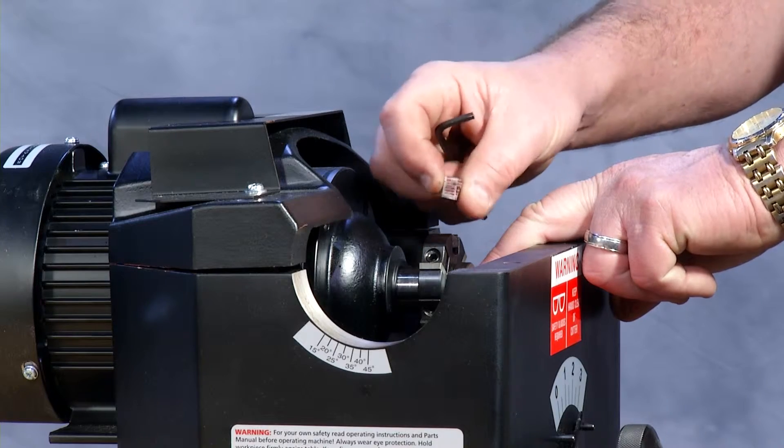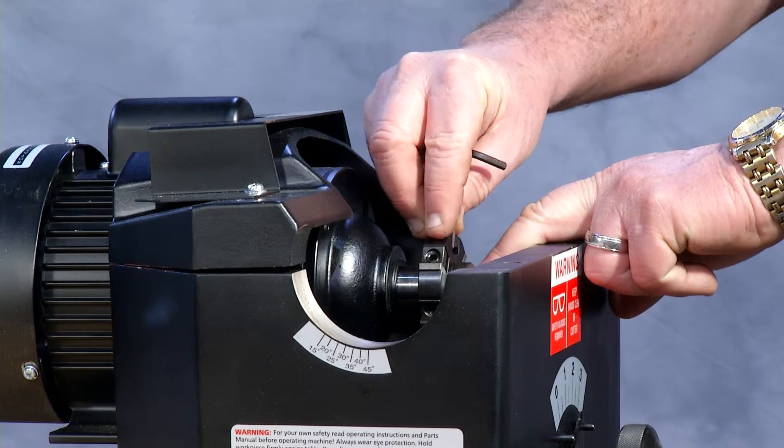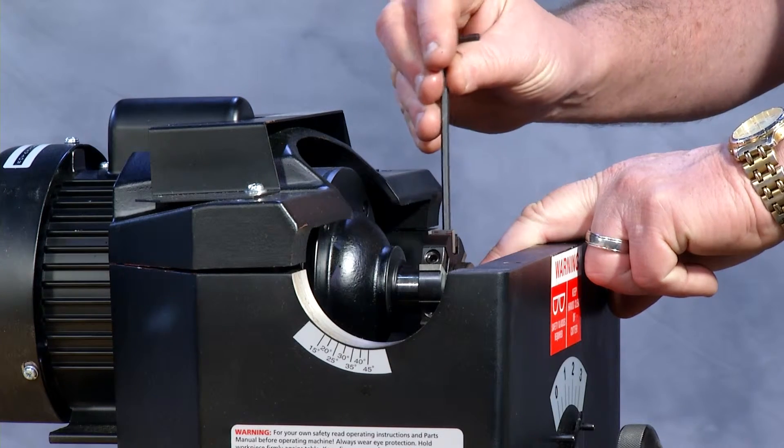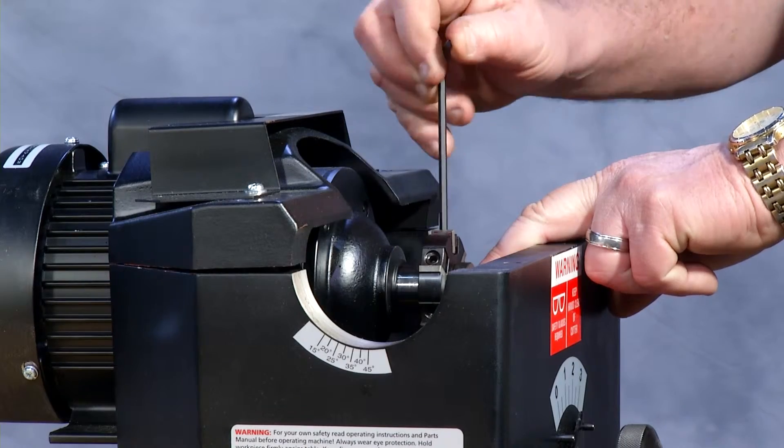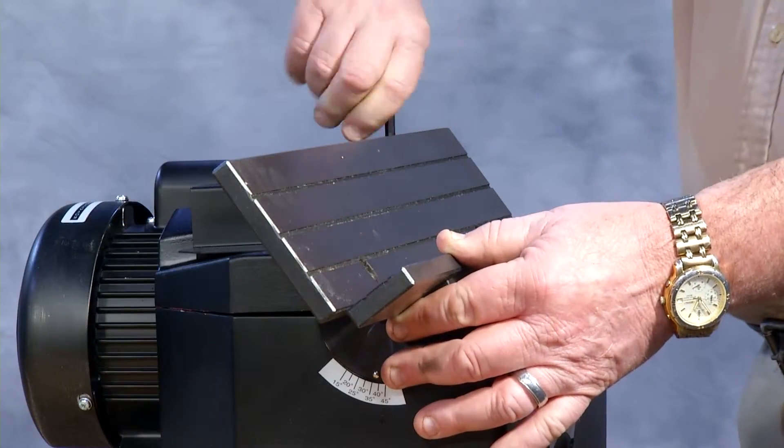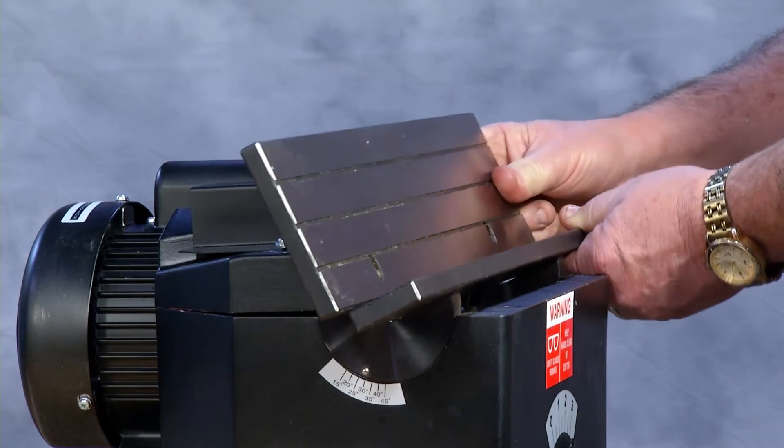Changing the inserts is done by loosening one screw for each insert, rotating it and then placing it back into the pocket. Two bolts on the top of the tool can be loosened and then you can change the angle.